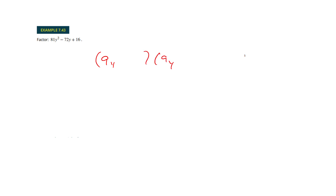The only thing that's changed here — I've got square roots on the front and square roots on the back, so I'm going to write them down. But look what's changed: I've got that middle term, but now the middle is a negative, so these need to be negatives. If you want to check: negative 36y and negative 36y makes the negative 72.